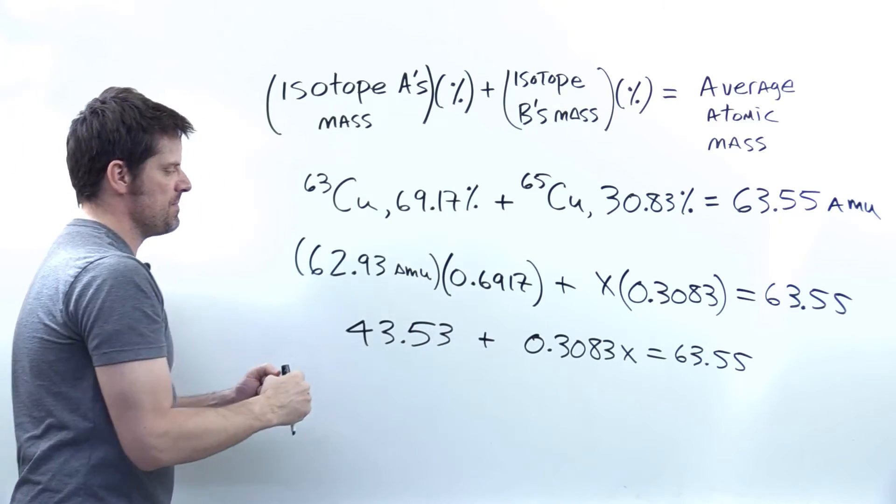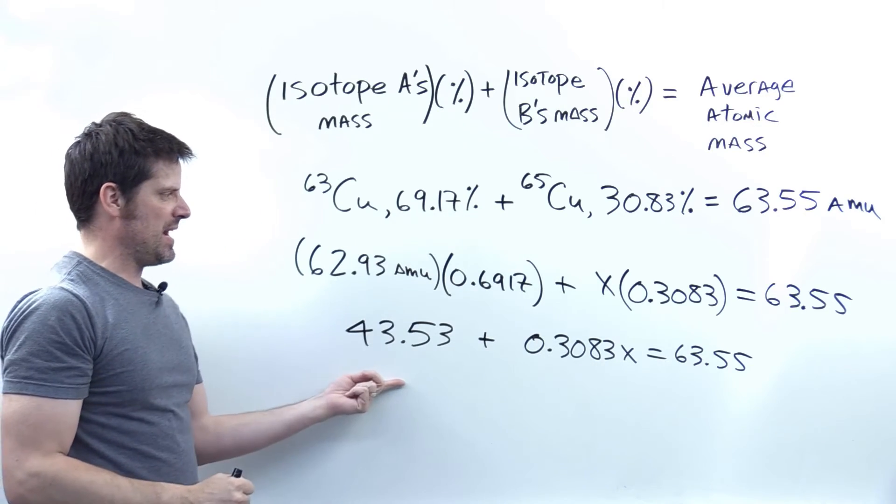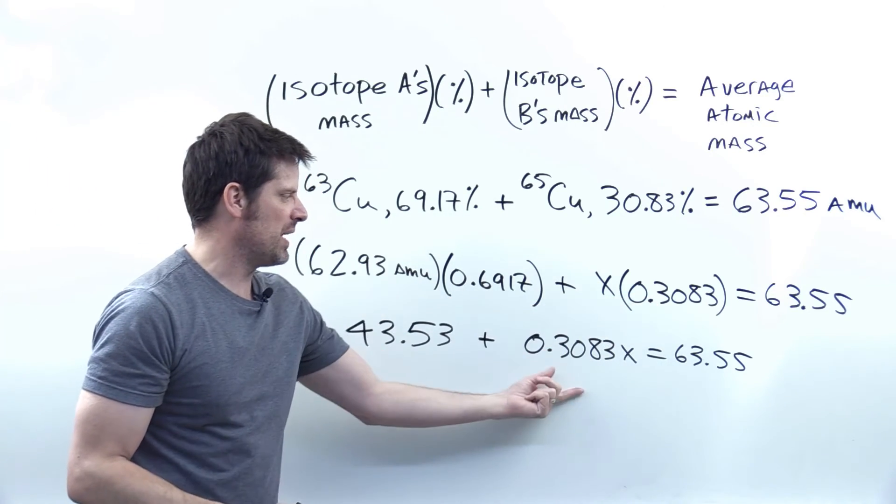Multiplying these two numbers right here, and rounding to the proper number of significant figures, gives me this number right here. I then add that to this multiplied through here.